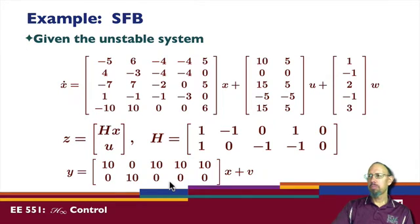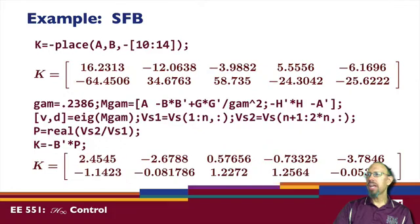And we can go through and just use a regular state feedback and observer. Let's just take a regular state feedback without an observer. Okay, so using the place command, I'm going to place the eigenvalues here for lack of a better reason. And the state feedback gain it gives me is this.